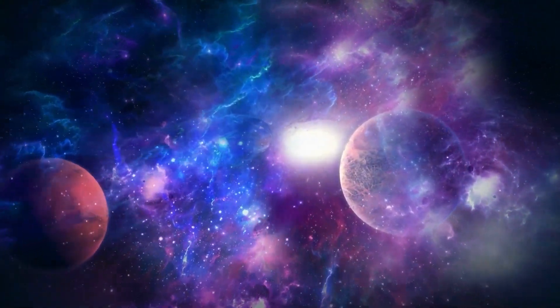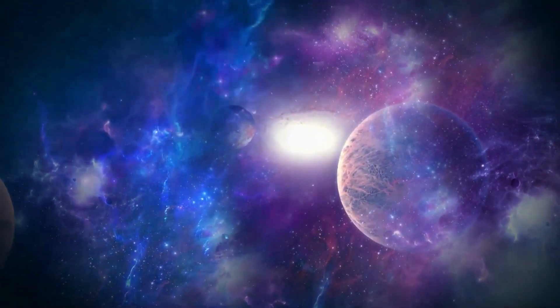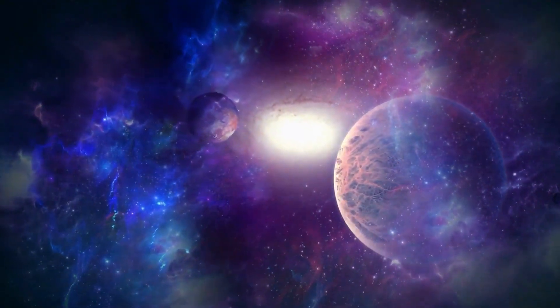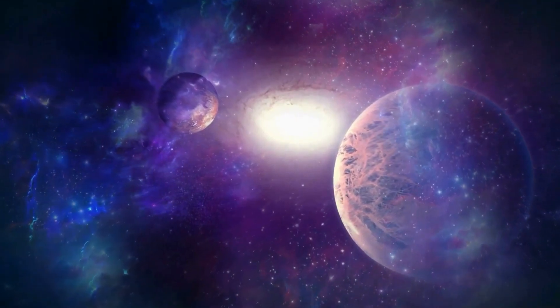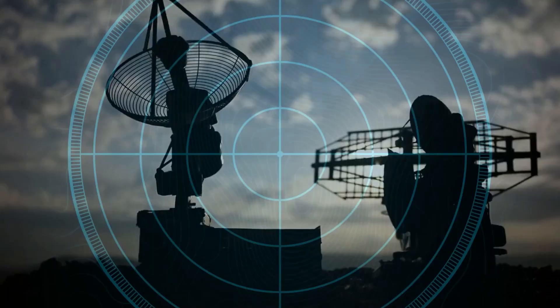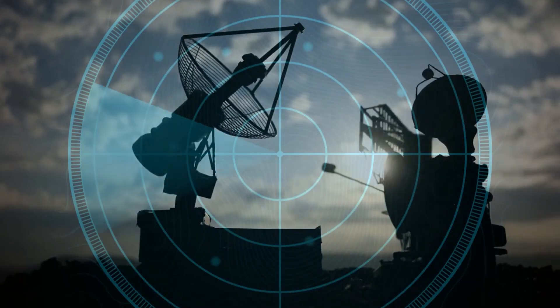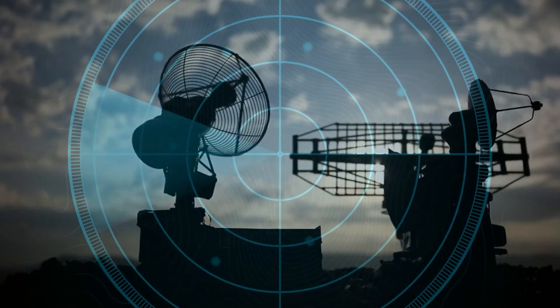When the red supergiant begins its supernova process, Betelgeuse will glow with an intensity of about nine times greater than the full moon, in an event that can be observed for an approximate period of time from Earth.